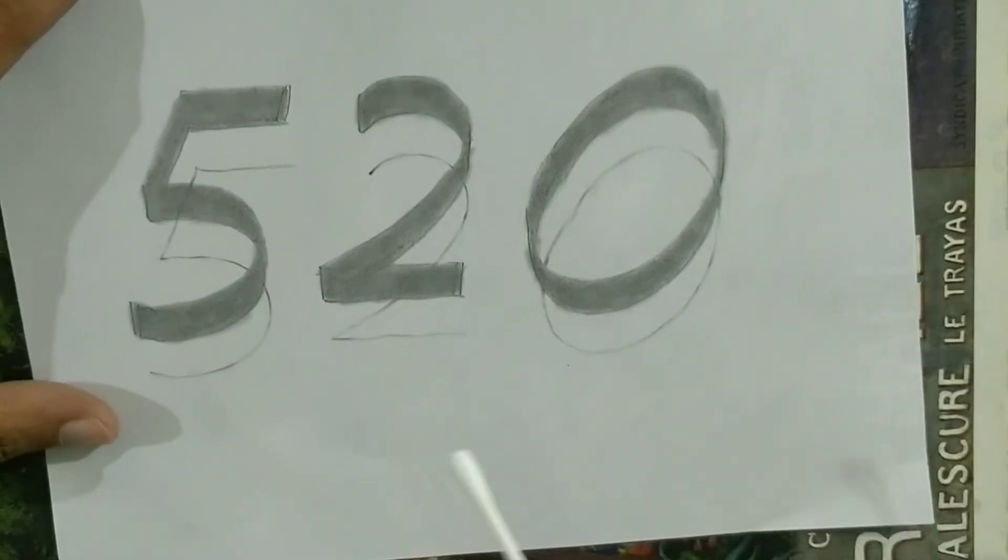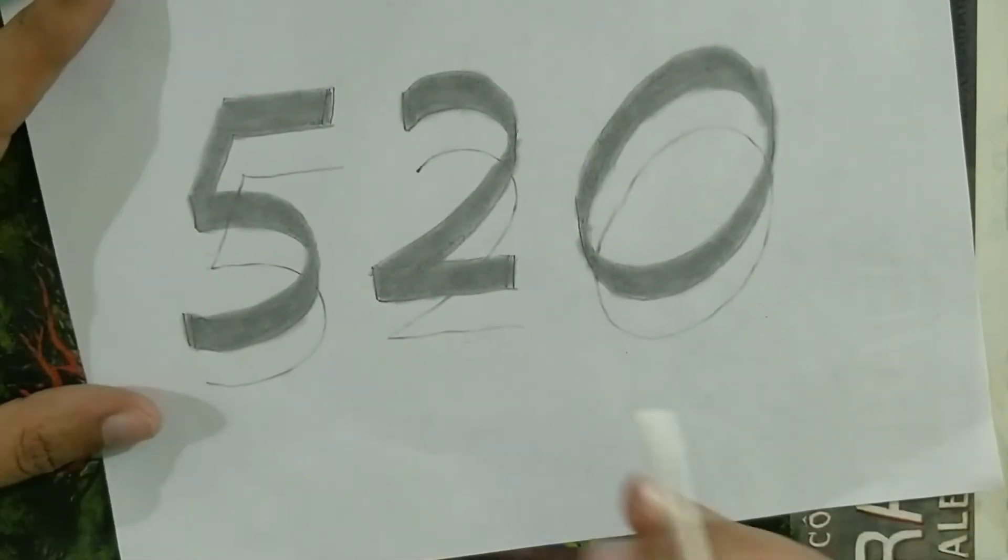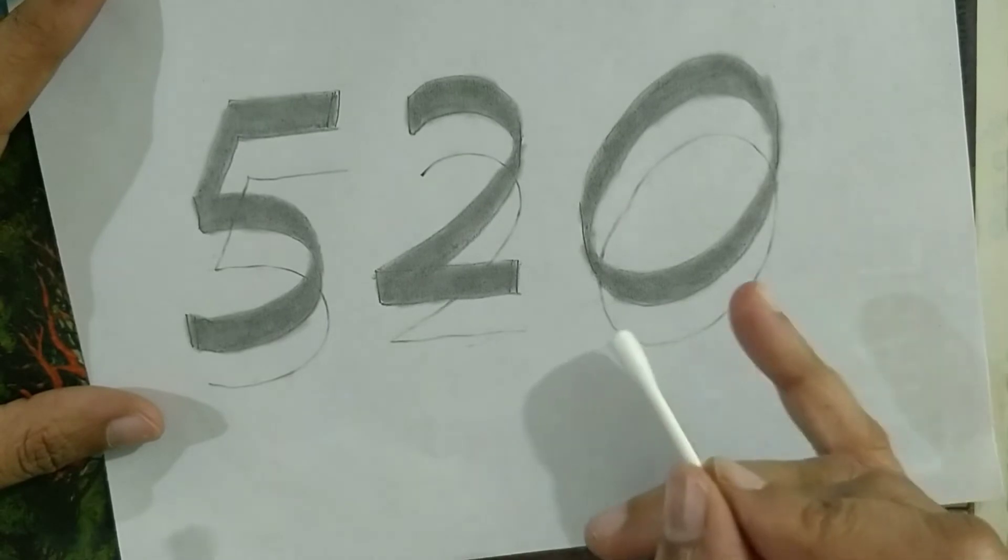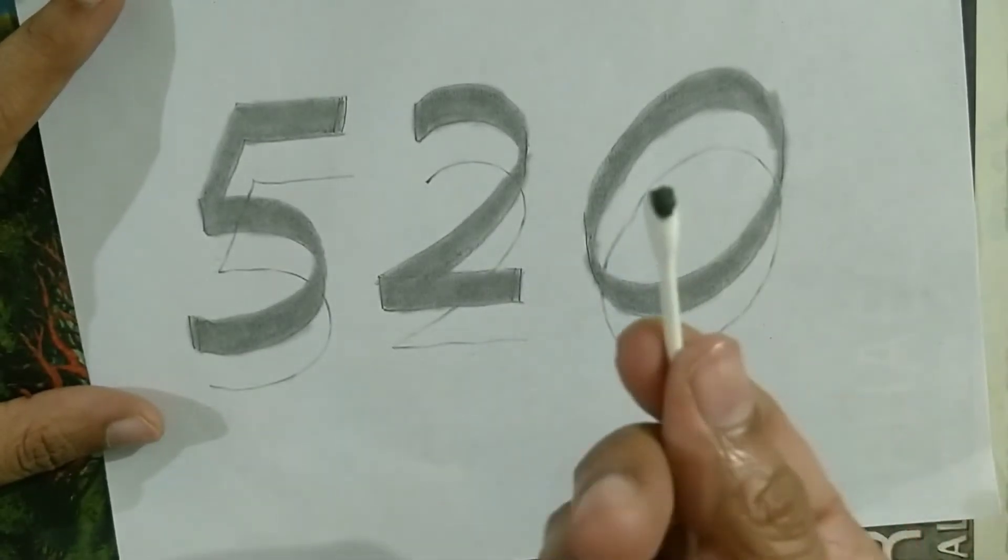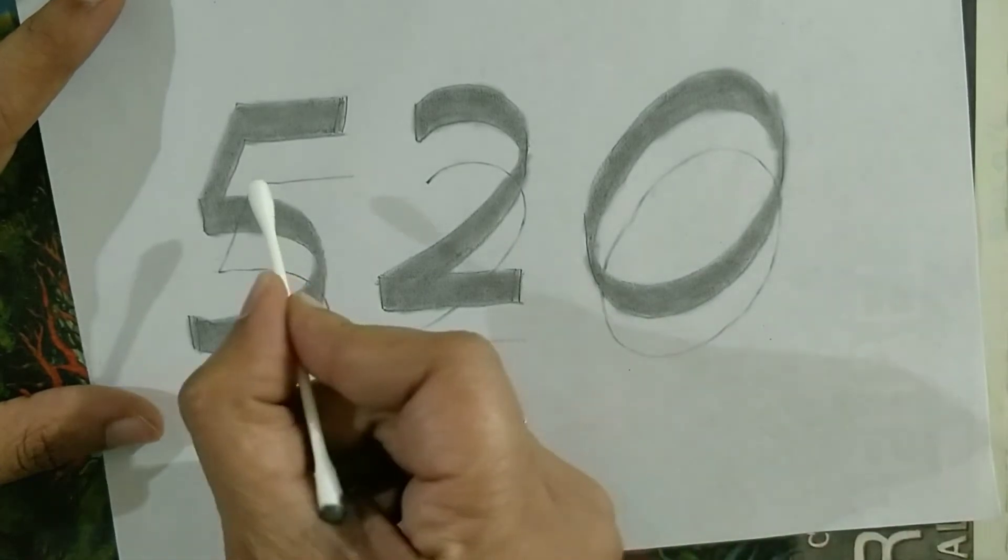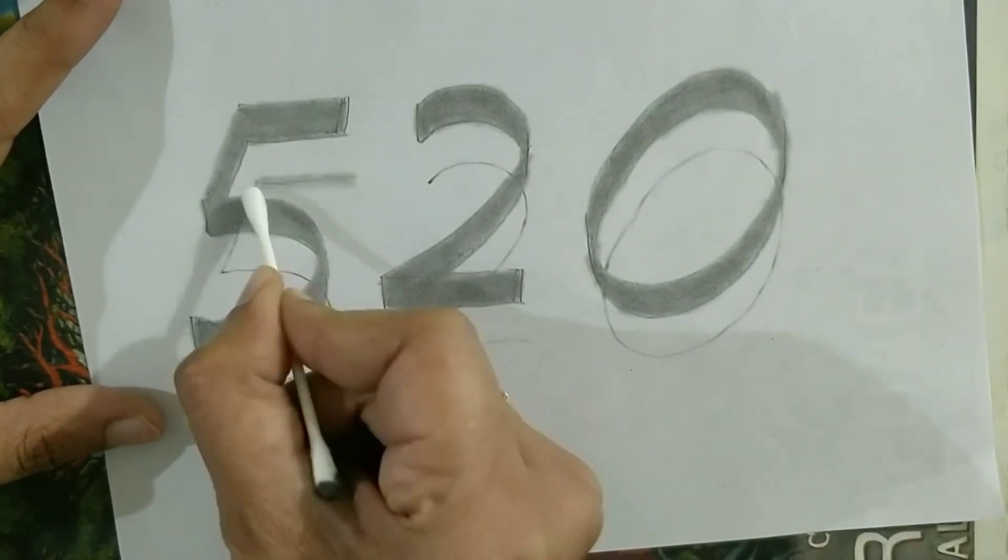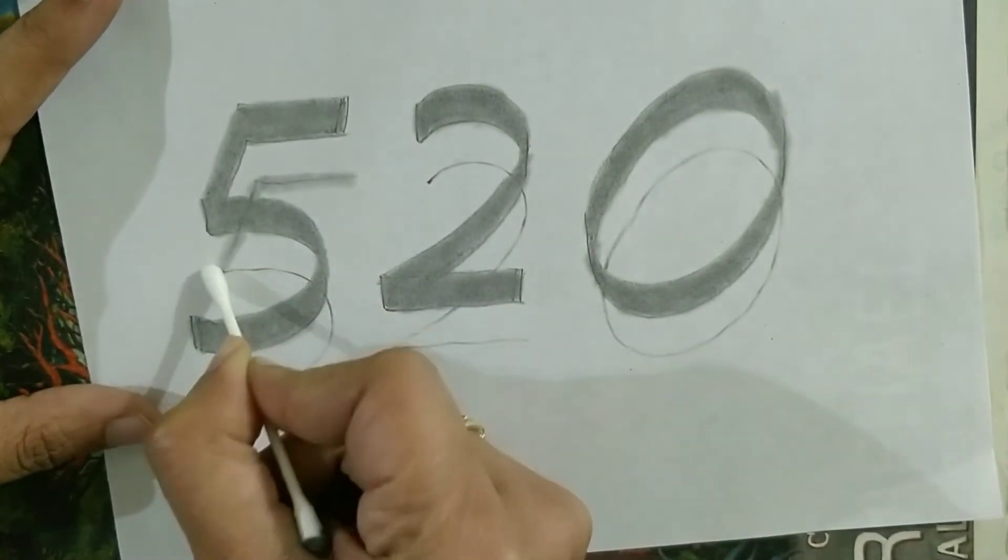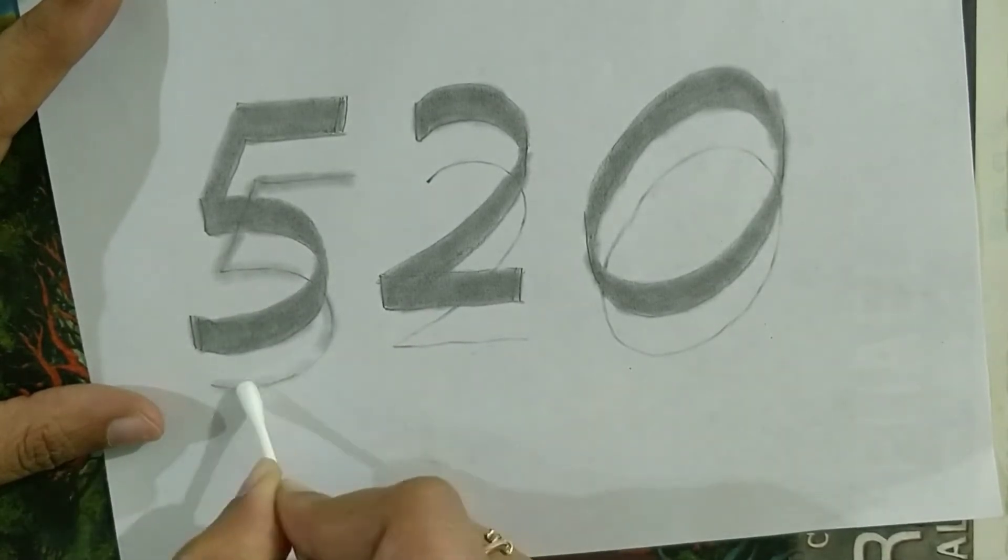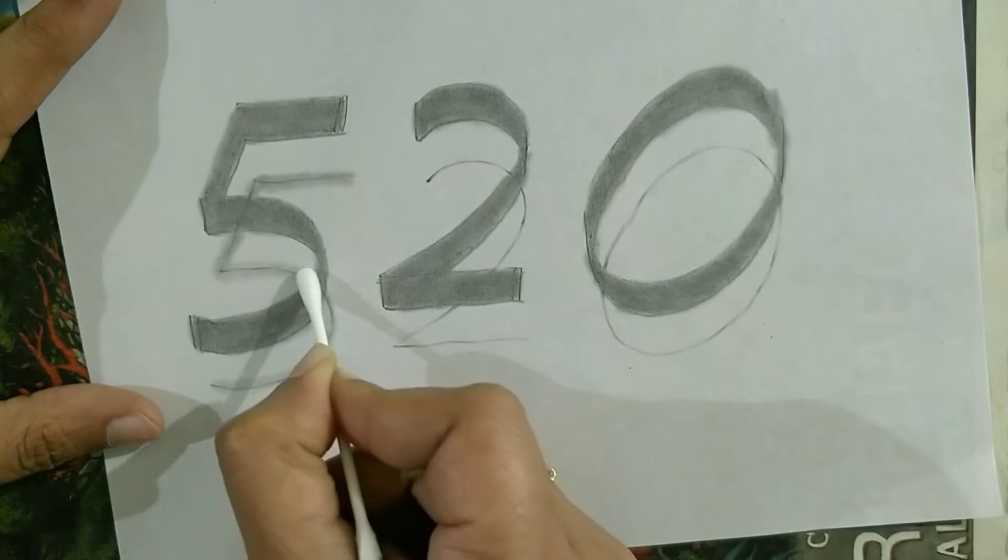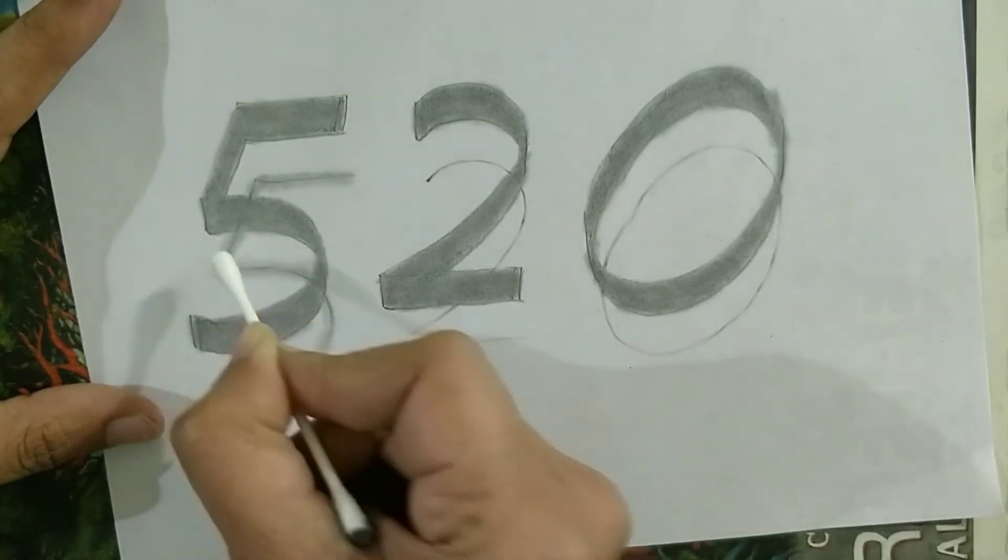So now this is the first thing. Second thing, what I'm going to do is my numbers are looking very dominating on the top and a little lighter ones on the bottom. Now I'm going to use the same ear bud where I have the smudging effect. I'm going to use it and blend it over here, only the blending. It should look like the light effect on the surface.